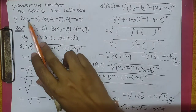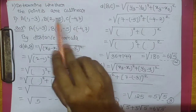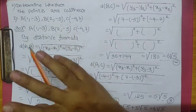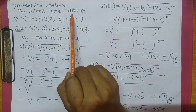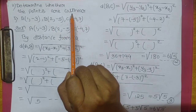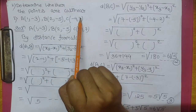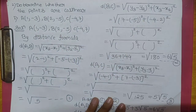Suppose karo, aapko check karna hai A, B, C — ye collinear hai ya nahi hai. Collinear ka definition: when points are in same line, that is said to be collinear.